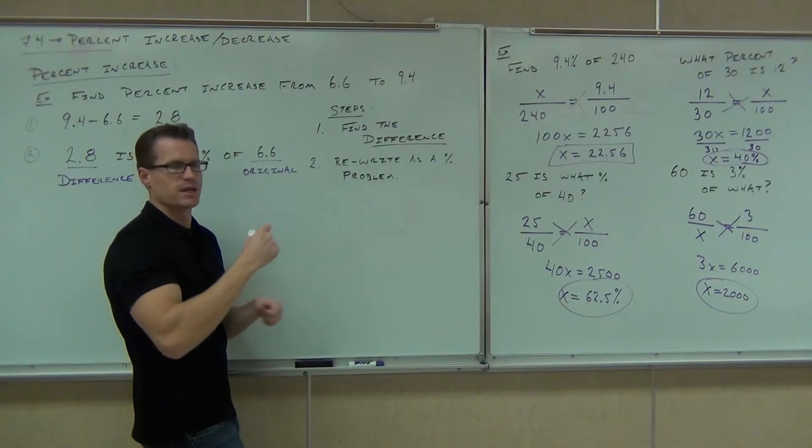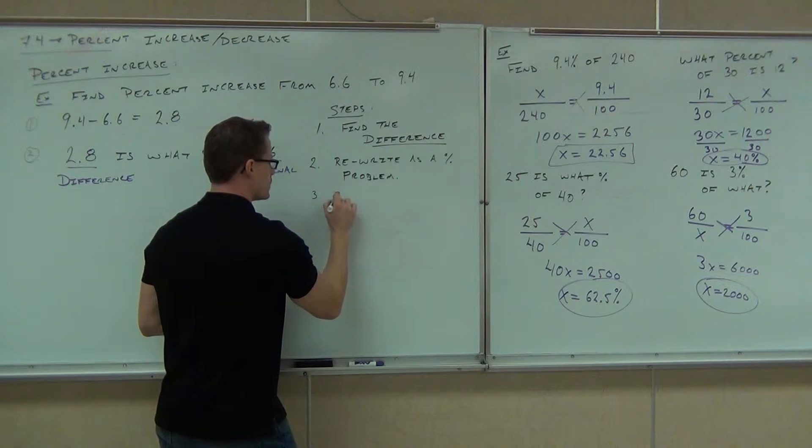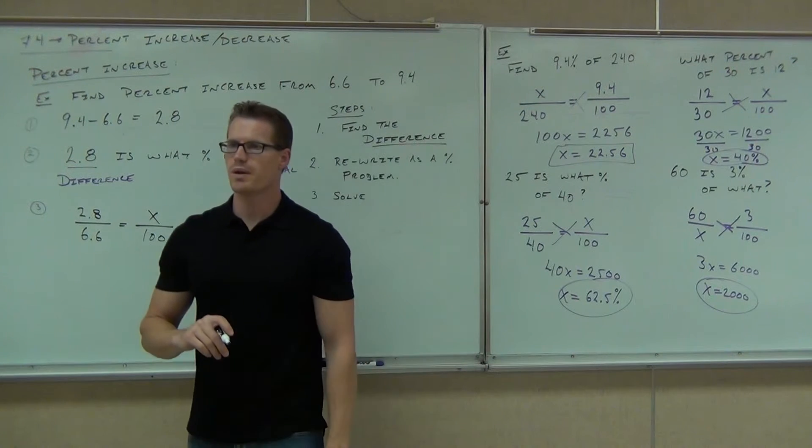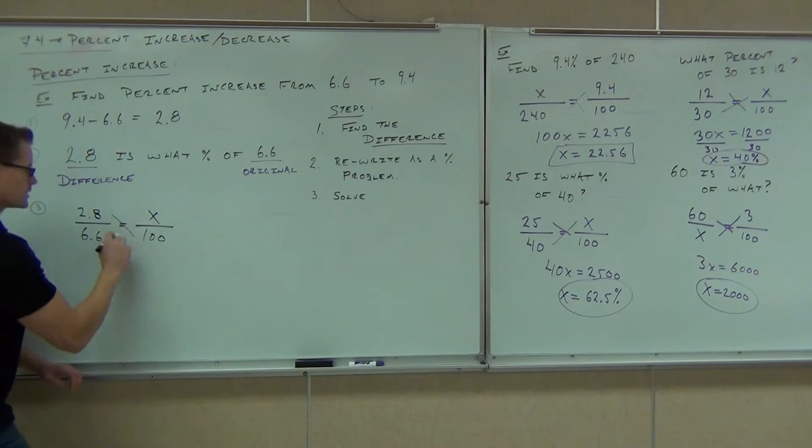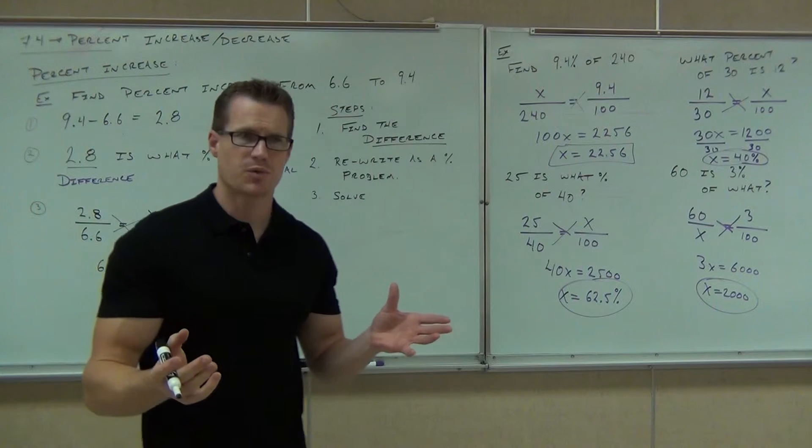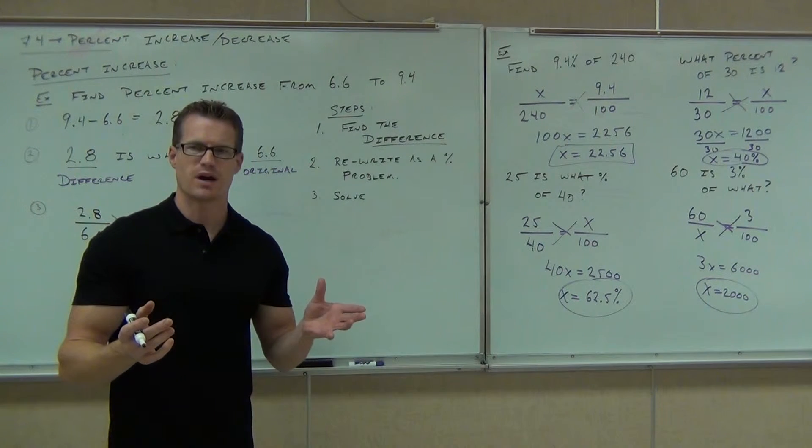Step three is just solve it like we normally would. Let's do it together. I know 100 goes there. What goes right here? 2.8. Good. What goes right here? X. Good. Why X? Because of what percent? And the of? 6.6. Cool. Can you keep going the rest of the way? We're going to get 6.6X. Don't let the decimals confuse you. It's just a number. Can't you still divide by 6.6?